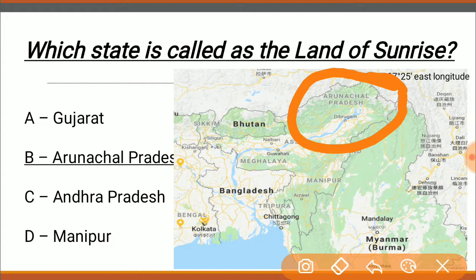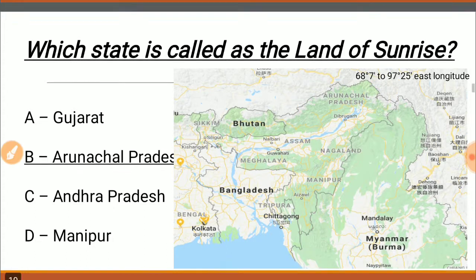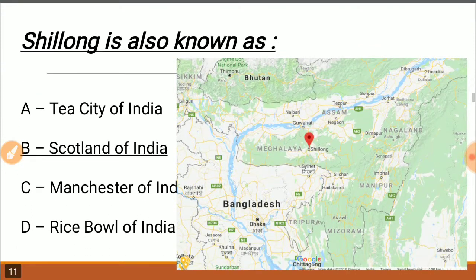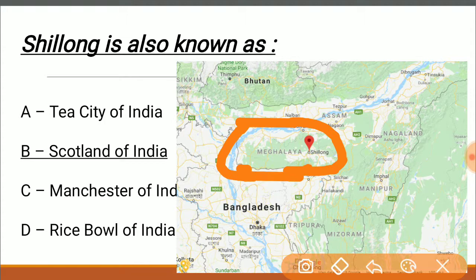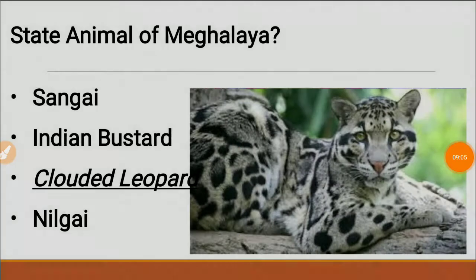Shillong is the capital of Meghalaya — a very nice, scenic place. It is also known as the Scotland of India.